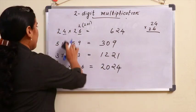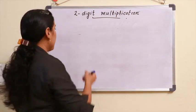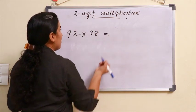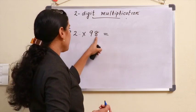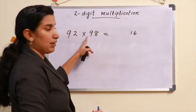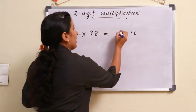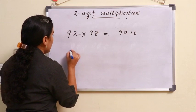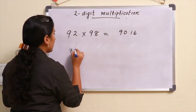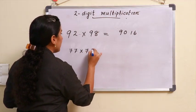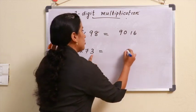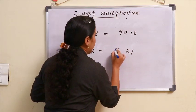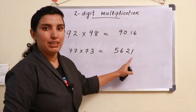Let's take a look at the next question. 92 × 98. How do we get the number? 2 × 8 is 16. 9 × 9 plus 1 — 9 × 10 = 90. So the answer is 9016. One more example: 77 × 73. 7 × 3 is 21. 7 × 7 plus 1 is 7 × 8. Here is the answer.